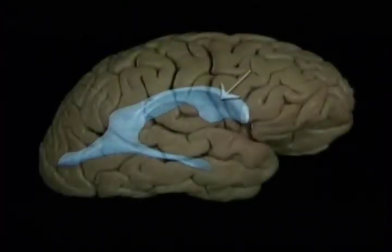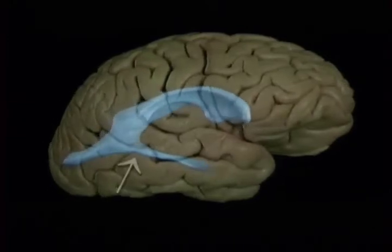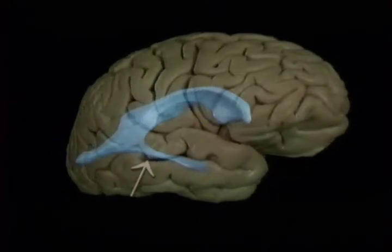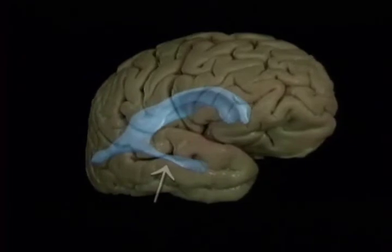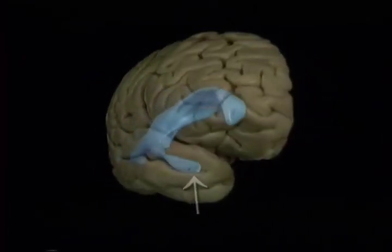The anterior horn is in the frontal lobe, the body is in the parietal lobe, the posterior horn is in the occipital lobe, and the inferior horn curls downward and forward into the temporal lobe.